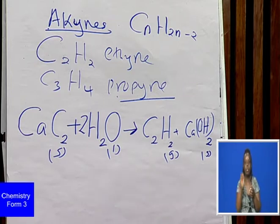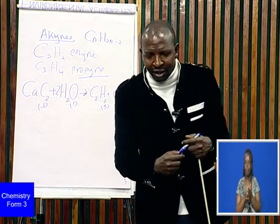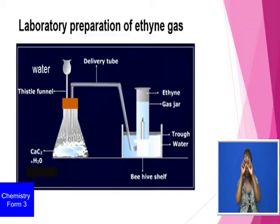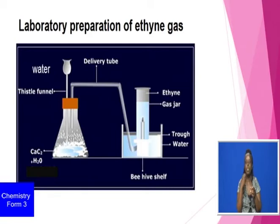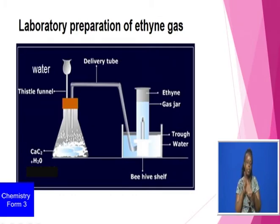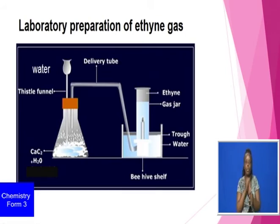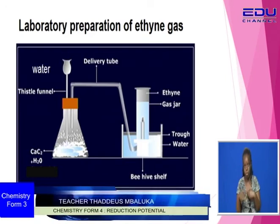Now let's look at the diagram on the screen. We are reacting water and calcium carbide to get ethyne gas and calcium hydroxide. There is a precaution: a layer of sand is put in the flask. That layer of sand will help prevent the breakage of the flask due to the high temperature, since the reaction is highly exothermic.